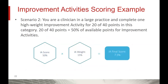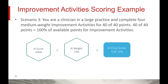In scenario two, you're a clinician in a large practice and complete one high-weighted improvement activity for 20 of the 40 points. So 20 of 40 is 50%, and running it through the equation, that times the weight gets you a final score of 7.5%.